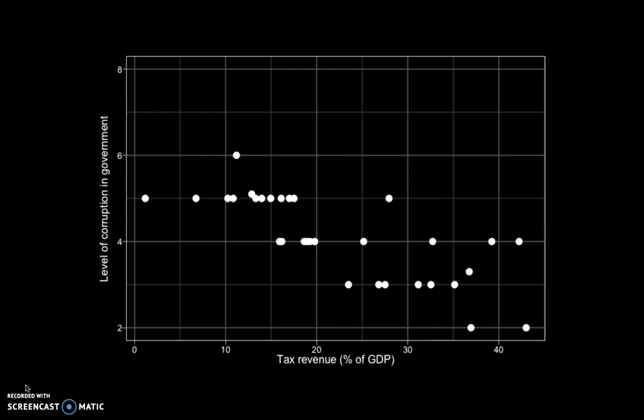Now that we have this data, the challenge is to estimate a line that summarizes this pattern. We want a line that shows what the pattern is in this data — what the relation is between tax revenue and level of corruption. Maybe visually you would have expected a slightly steeper line, but you get this line because a regression analysis tries to minimize the vertical distances between the point and the line, not the perpendicular line distance. Your eyes are more inclined to minimize the perpendicular distances.